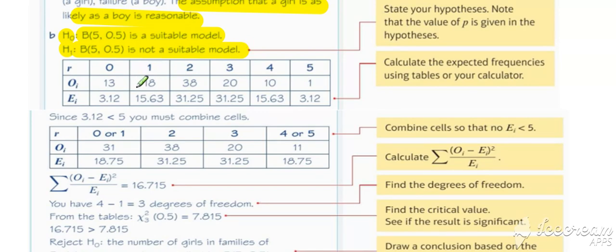So to work out the expected values, we need to use our binomial distribution. So we need to use that to work out X is 0, X is 1, X is 2, 3, 4 and 5. And you can get those off your calculator. You could have tabulated them in a list or work them out individually.